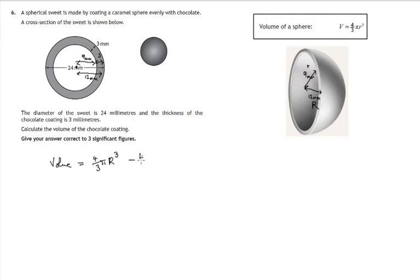We'd have the whole volume that's using the large radius of 12. And then we take away the volume of the spherical space in the middle, which is a sphere of radius little r. So these are the calculations we're going to do.